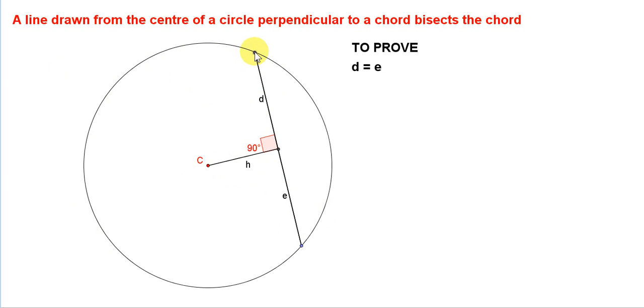We are going to prove that the distance from this point to this point here, which I'm calling D, equals the distance from this point here to this point here, which I'm calling E.